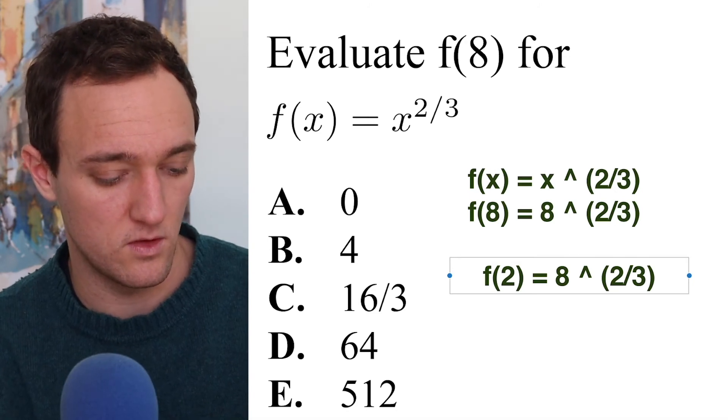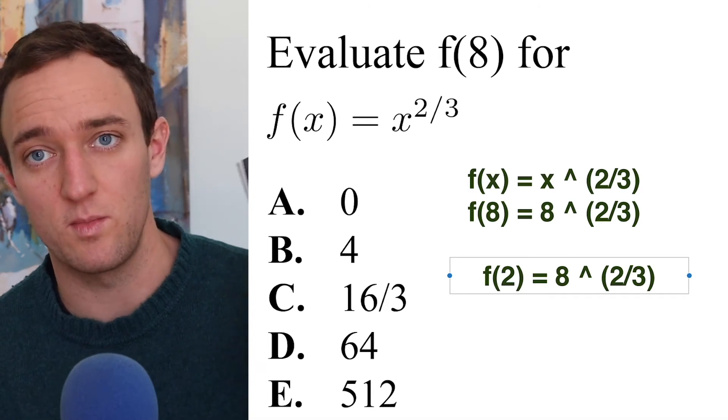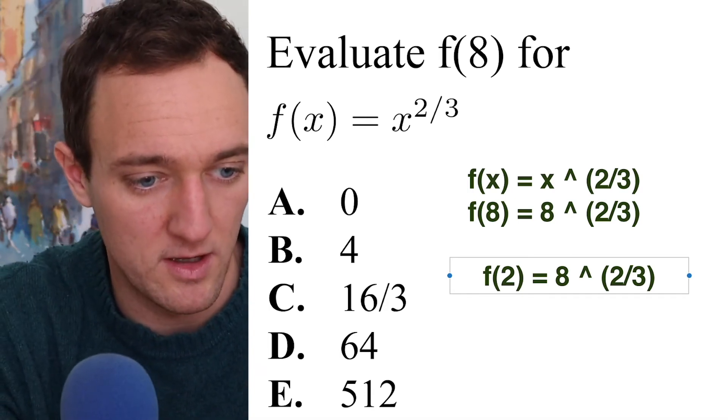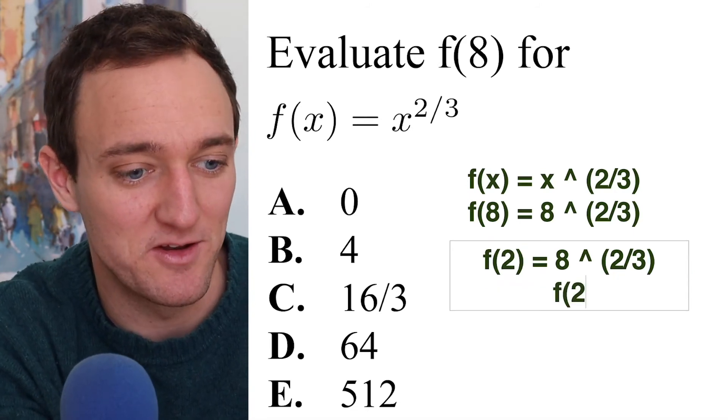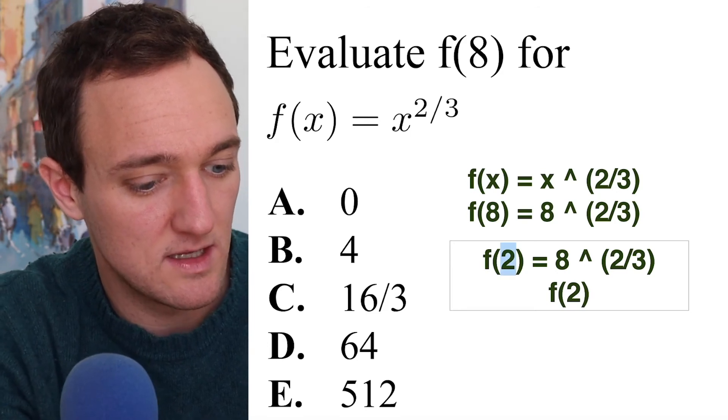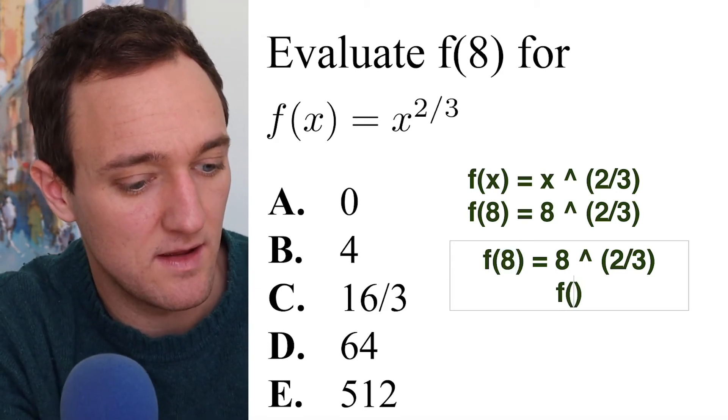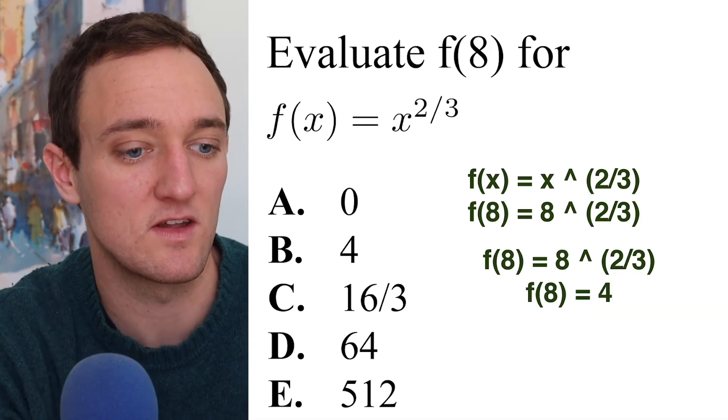And sure enough, you're going to get f(8) equals, we can just plug it right here into the calculator. Look at that. I made a mistake. It's not f(2), we want to know what f(8) is. I got too used to saying f(2). So let's change this to eight. First strategy for the ACT, you can use your calculator. So just use your calculator. Eight, two over three. We put it in. And sure enough, it's just going to spit our answer out. It's going to say four. F of eight comes out to four. So that's one way of doing it.